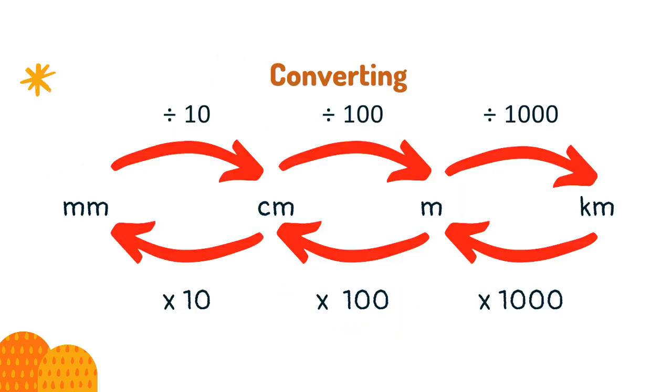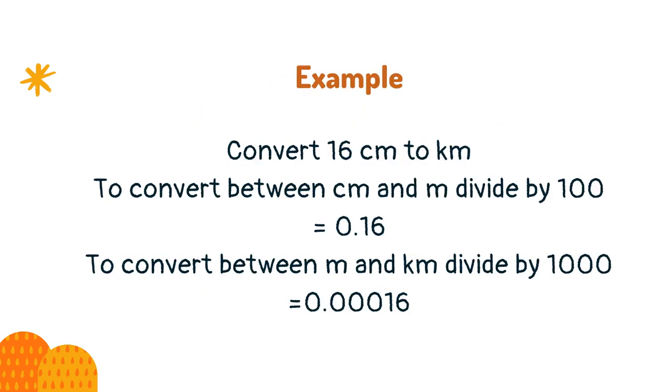This chart will help you convert between metric units. Convert 16 centimeters to kilometers. To convert between cm and m divide by 100, which equals 0.16. To convert between m and km divide by 1000, which equals 0.00016.